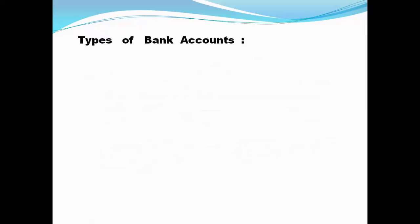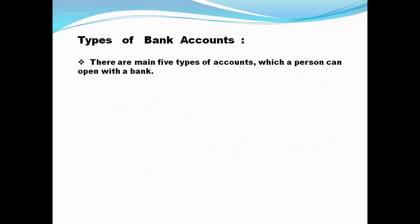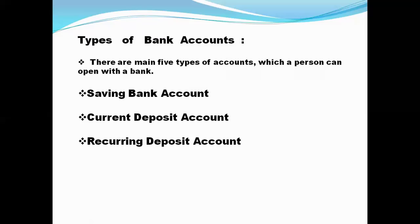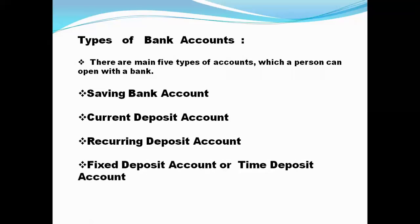The second point is the types of bank account. There are mainly five types of account which a person can open with a bank. The third one is the recurring deposit account. The fourth one is the fixed deposit account, also called the time deposit account, and the last one is the flexible account. So students, these all are the five types of account which a person can open with a bank.